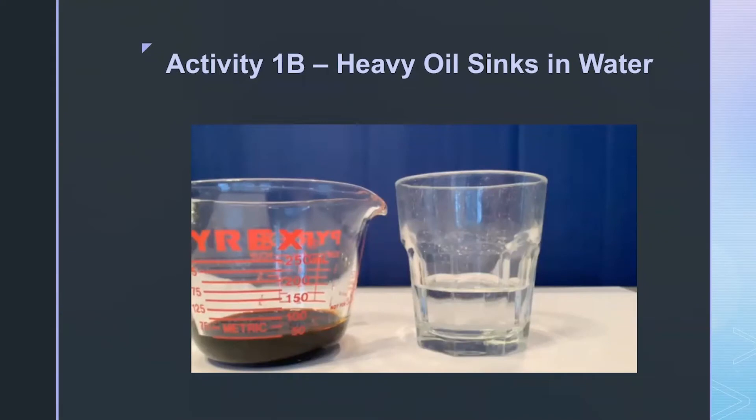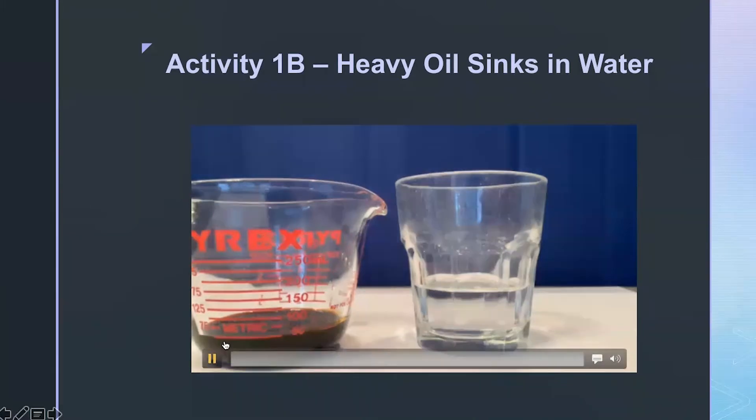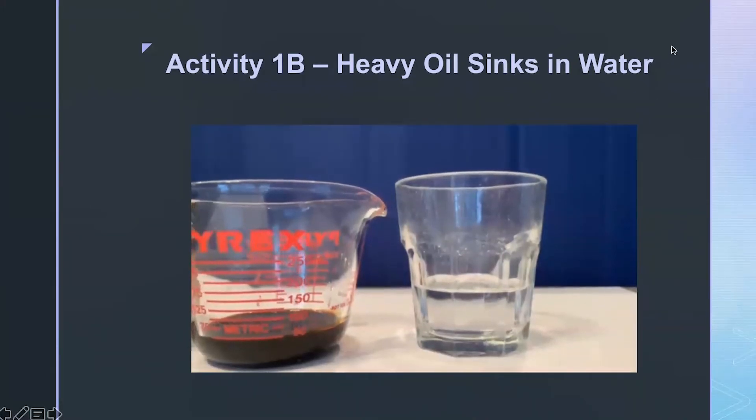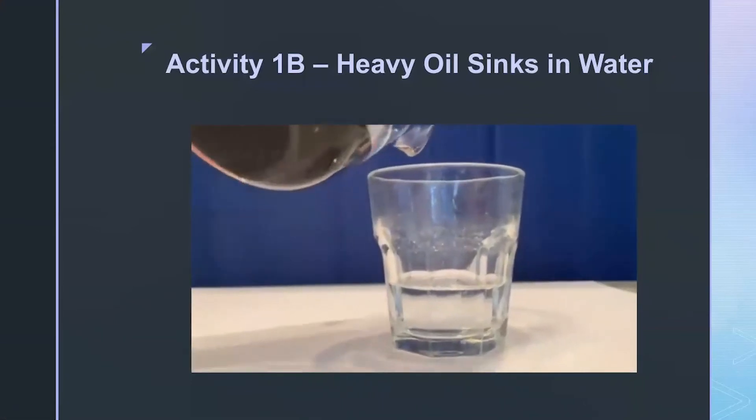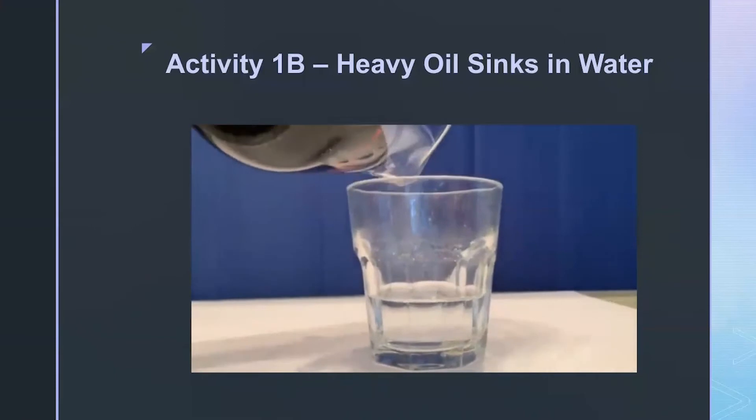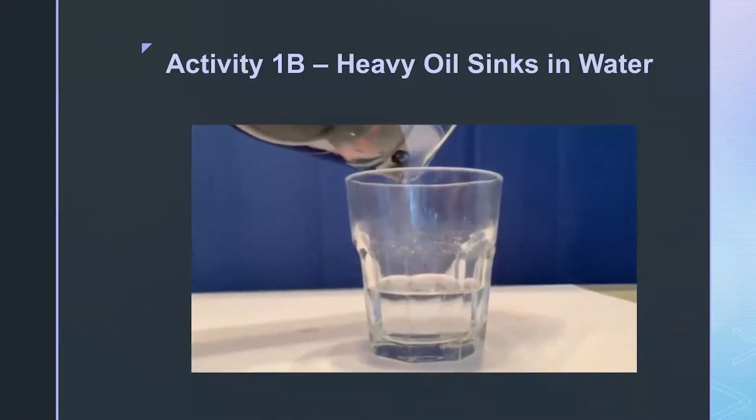In our next activity, we're going to look at what happens when we add heavy oil to water. Now, of course, we're using molasses instead of heavy oil. So you will take your molasses and add it gently into a glass that has a little bit of water in it. And just slowly pour the molasses.